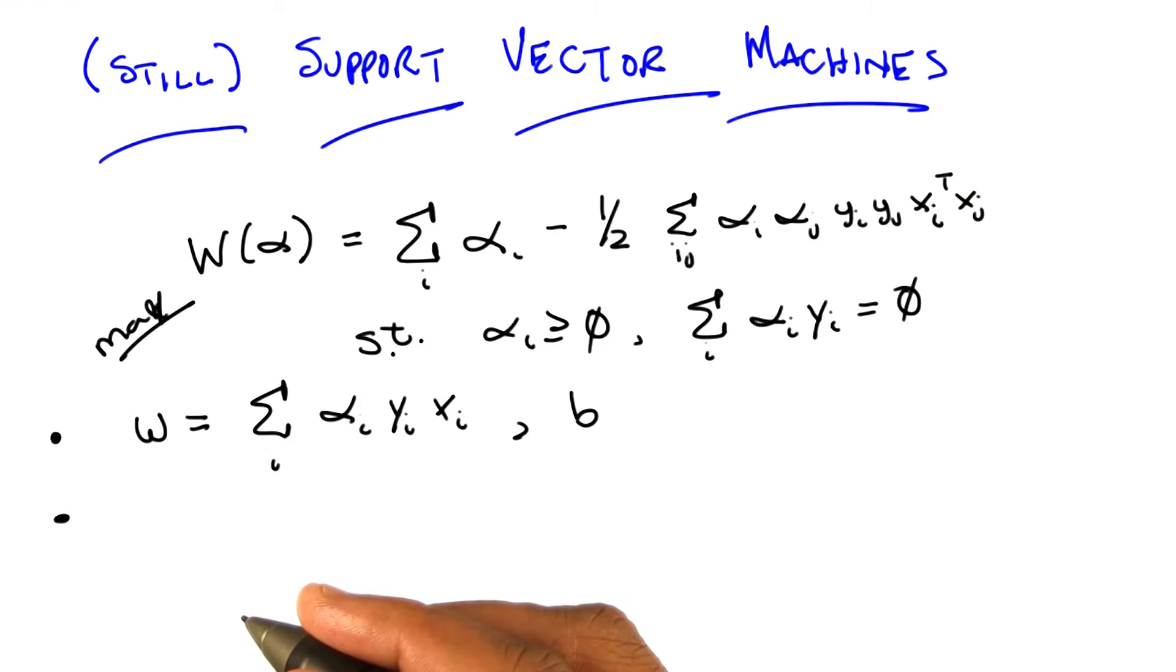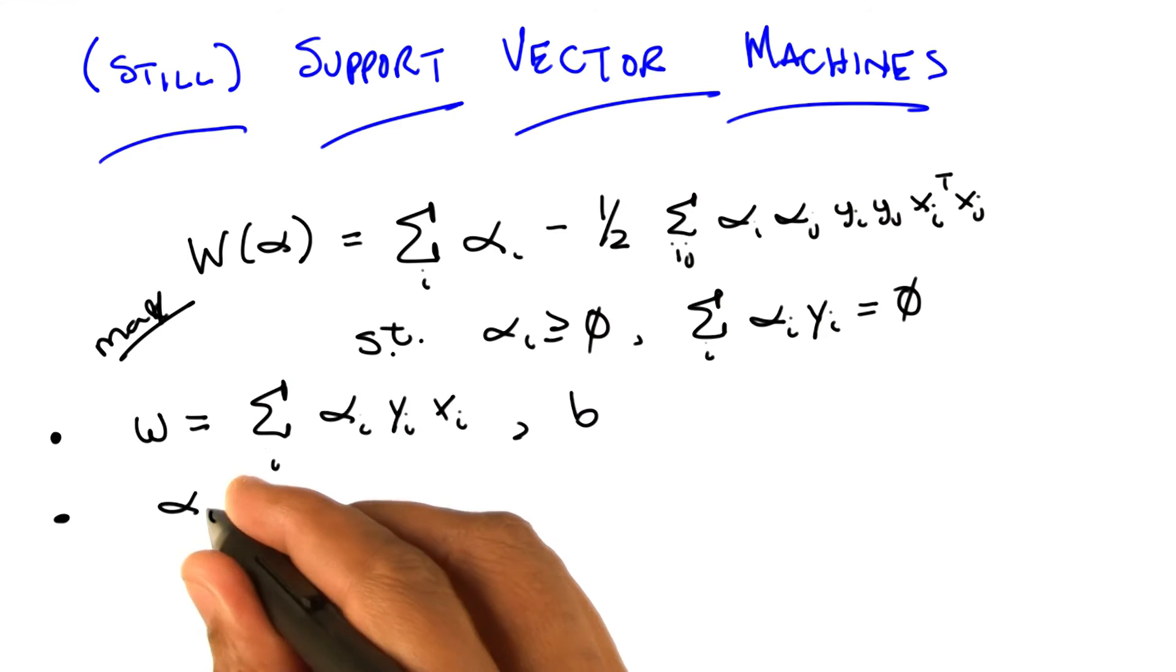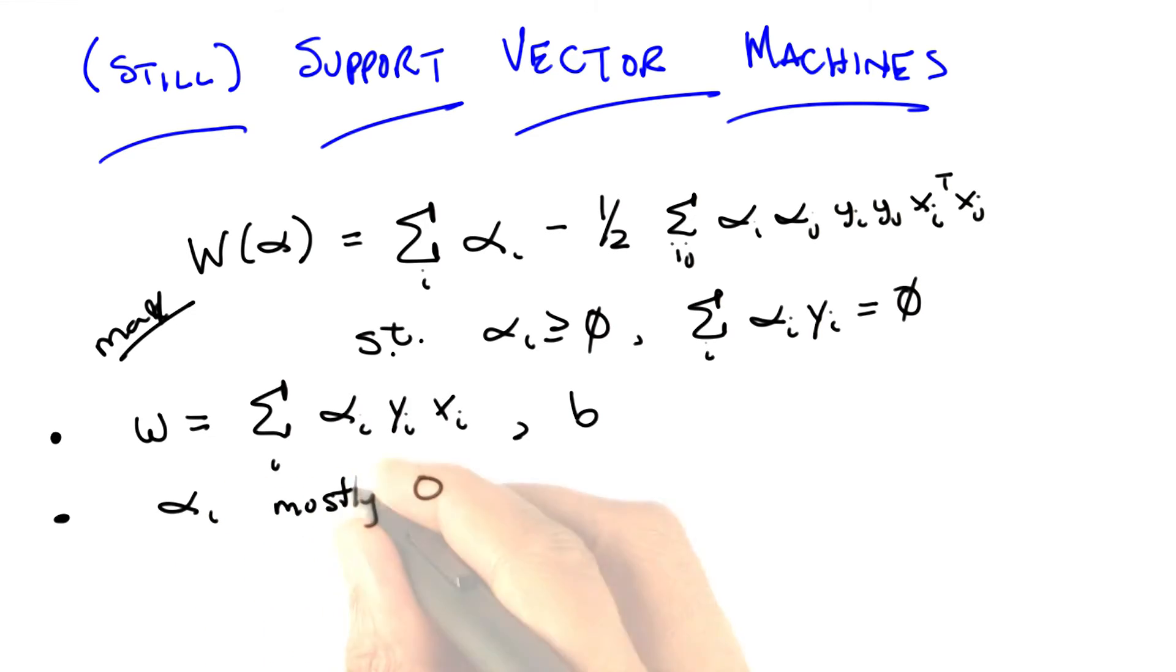It turns out, okay, that alpha, each of those alphas, are mostly zero, usually. So if I told you that in the solution to this, most of the alphas that you come back with are going to be zero, what does that tell you about w?